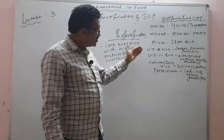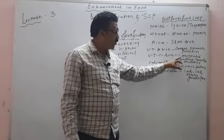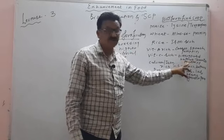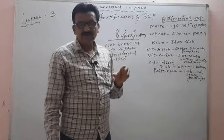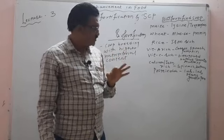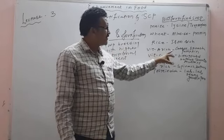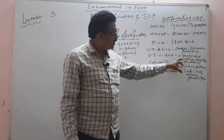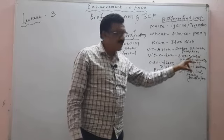Vitamin A is found in these crop plants. Vitamin C is found in certain crop plants — bitter gourd, bathua, coconut, tomato, and mustard.